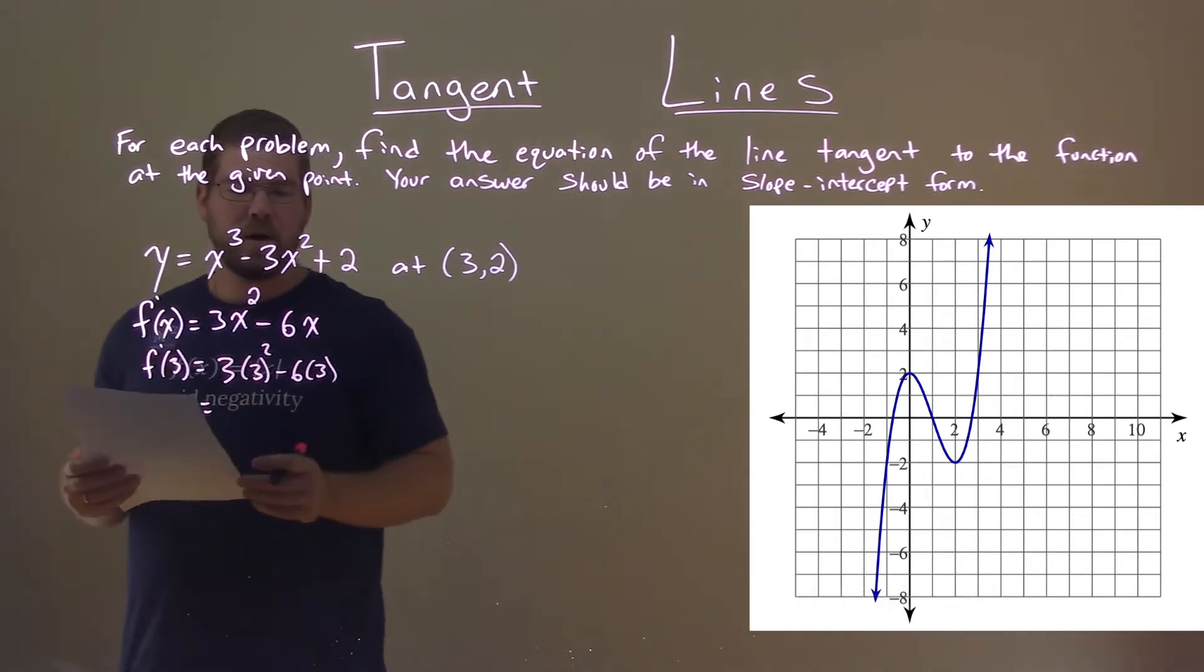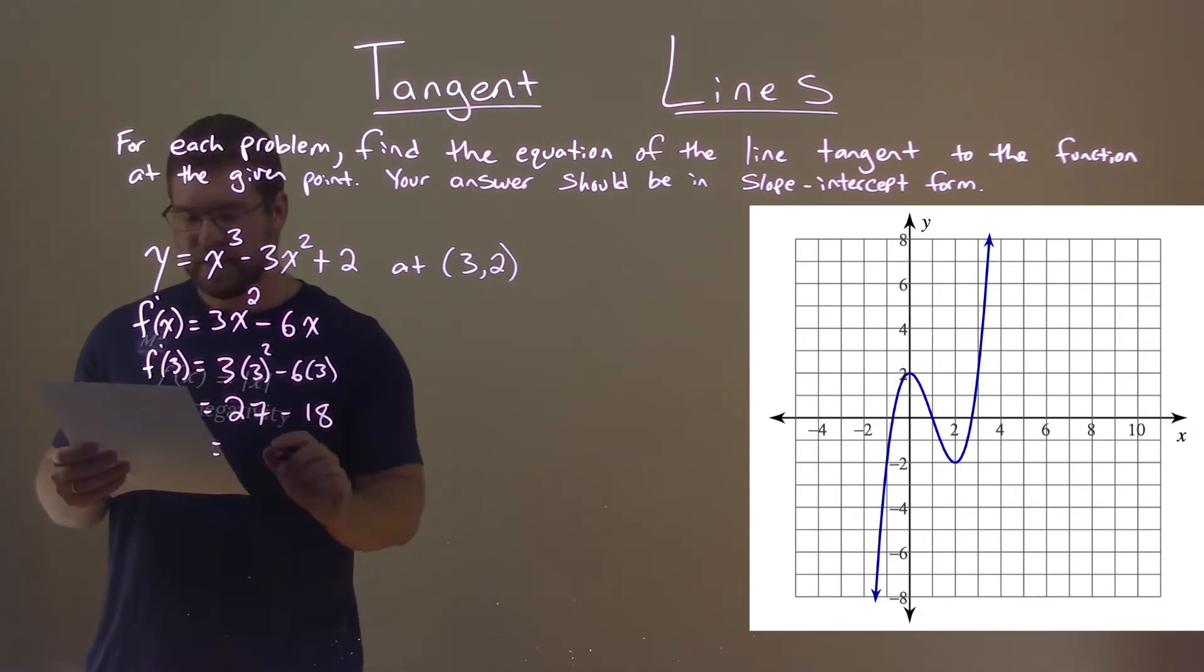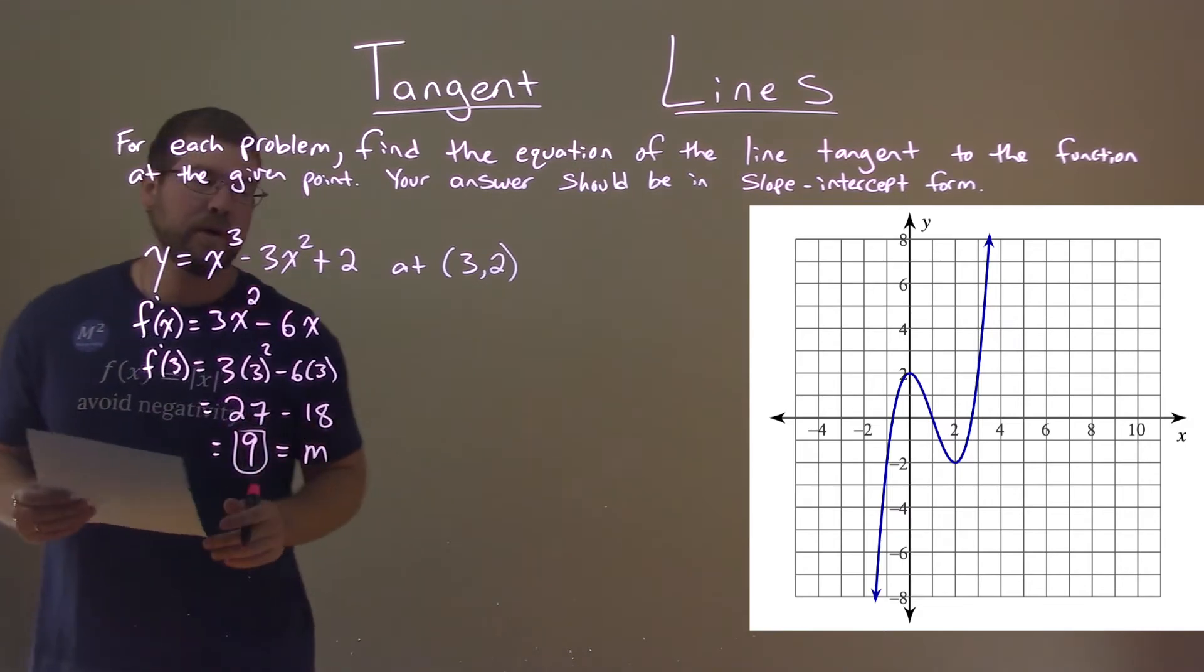3 squared times 3 is 27, and 6 times 3 is 18. We subtract them: 27 minus 18 gives us 9, and that is our m value, the slope at x equals 3.